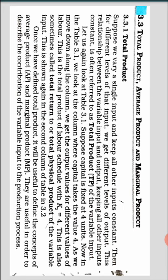Today we are going ahead with the topic of total product. Suppose we vary a single input and keep all other inputs constant. That means one element is constant and another element varies — it goes on changing. You might ask: how can one variable be constant and another vary at the same time?